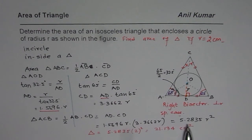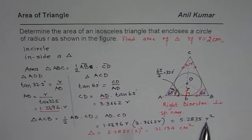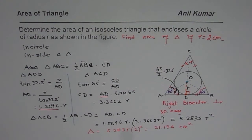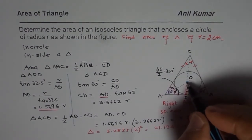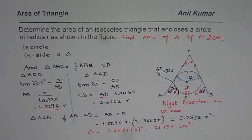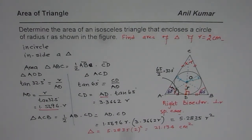What we have here is a general expression in terms of R that can be used for any value of R. This is how you can combine trigonometry with coordinate geometry — specifically, the theorem that the angle bisectors of a triangle intersect at a point equidistant from all three sides. That point is the center O, which forms a circle of radius R touching all three sides. We considered an isosceles triangle here, and in the next video we'll take up an equilateral triangle. I hope that helps — thank you and all the best.